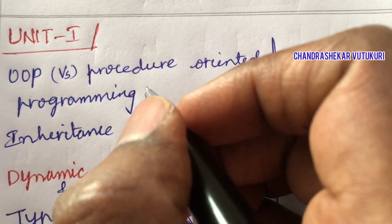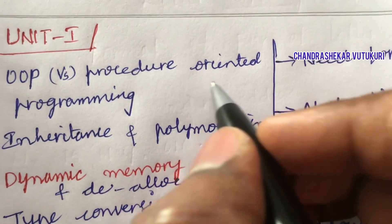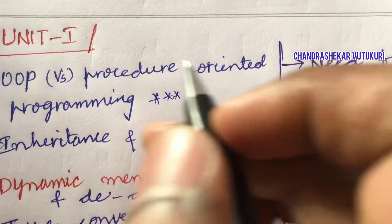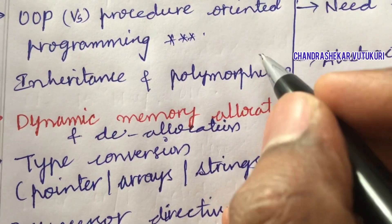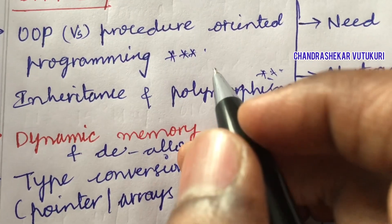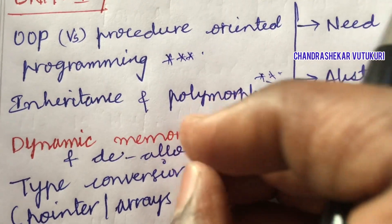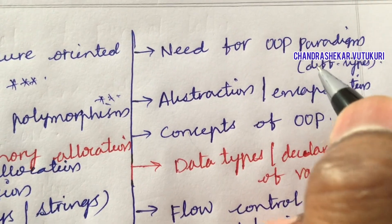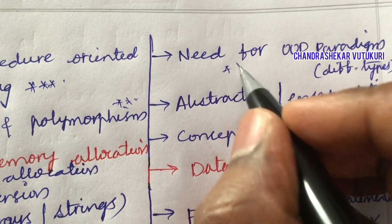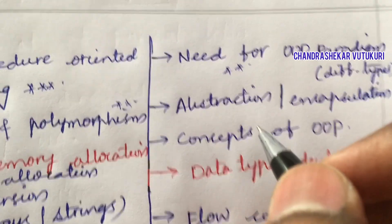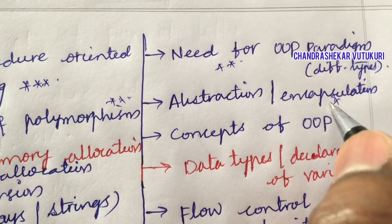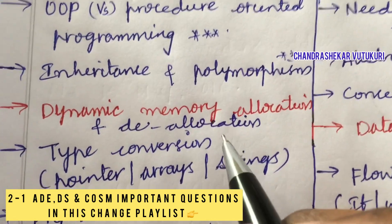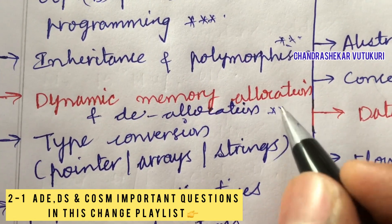The first and foremost question is OOP versus Procedure Oriented Programming, which is said to be the topmost question. Differences between inheritance and polymorphism, which you will study in the coming units, are also key. Strong fundamentals of Unit 1 are needed: the need for OOP paradigm and its different types is a short question; abstraction and encapsulation concepts are also short questions; dynamic memory allocation and deallocation is expected as a long question.